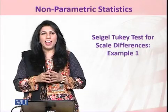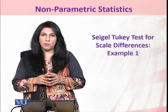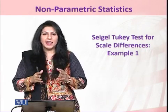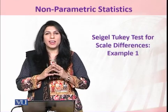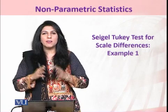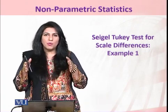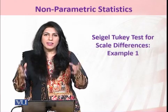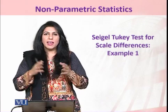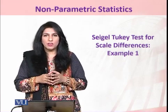If we have to test whether the location parameters of two populations are identical to each other, then the required assumption is to first test whether there is a difference between the two variations. That means whether the variation between the two samples is the same or there is any difference between the two.